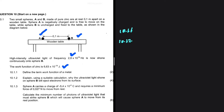Question 10.1.2: explain using a suitable calculation what the ultraviolet light shone on sphere B will eject electrons from its surface. There are two ways you can do this. You can convert the work function to the threshold frequency and then compare threshold frequency with the frequency that is shone. The other way is to use the frequency shown to find the energy incident on the metal surface and compare that energy to the work function.